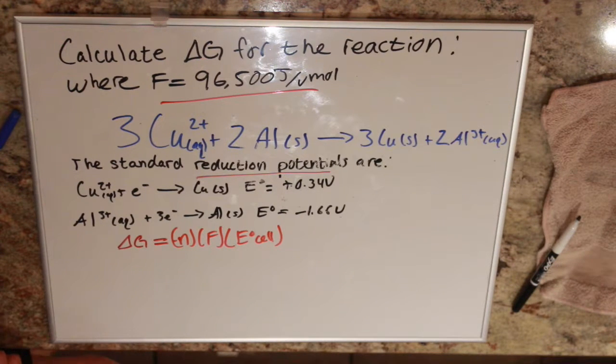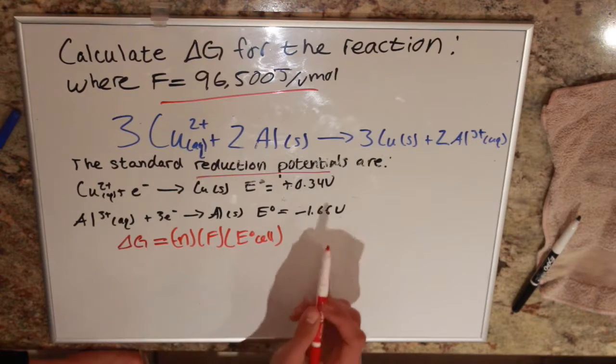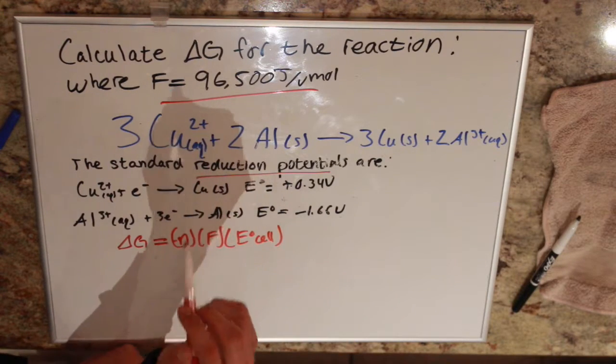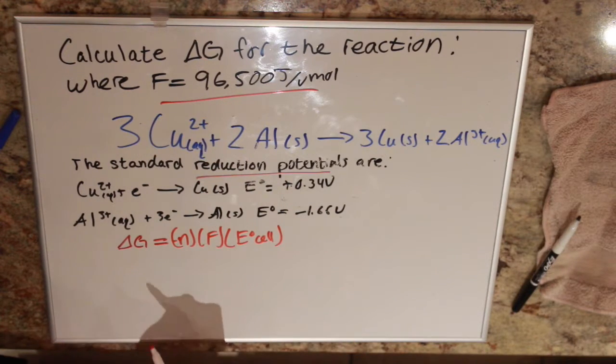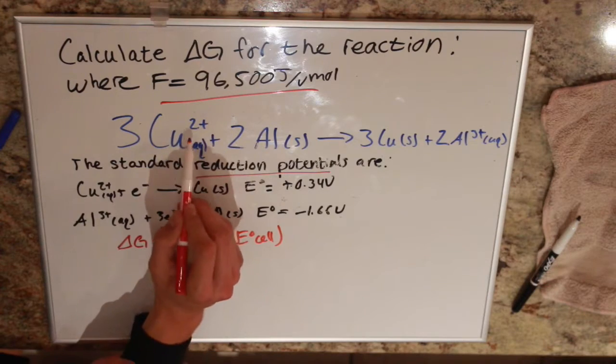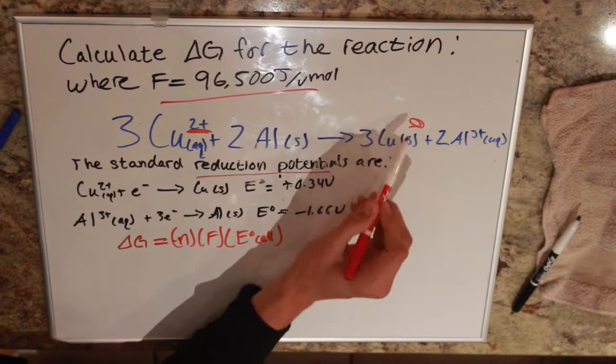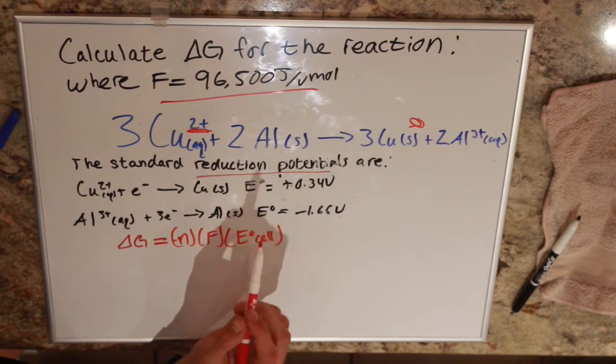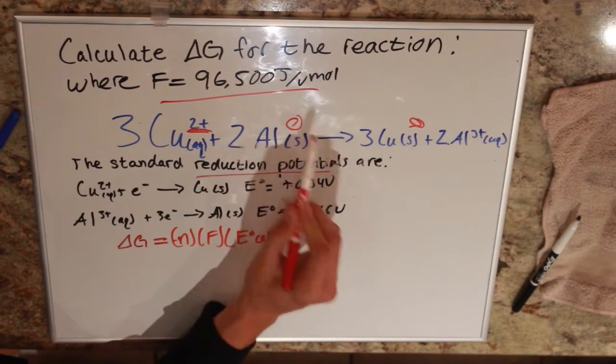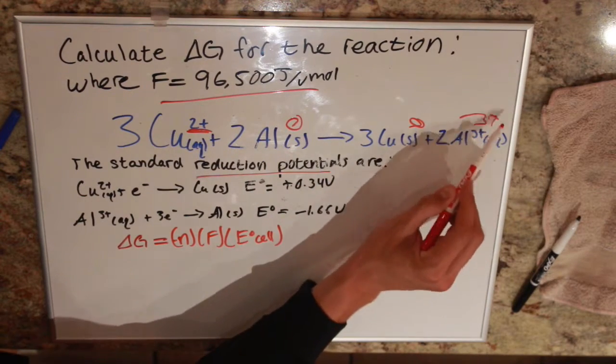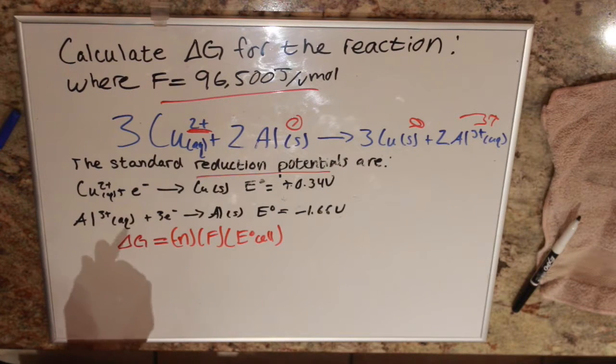So we get our cell potential from subtracting our anode from our cathode. We can see that our cathode is one that's going to be reduced or gain electrons. In this case, our copper is going from 2+ to 0, meaning that it is gaining electrons. And that would make this aluminum our anode because it is losing electrons.